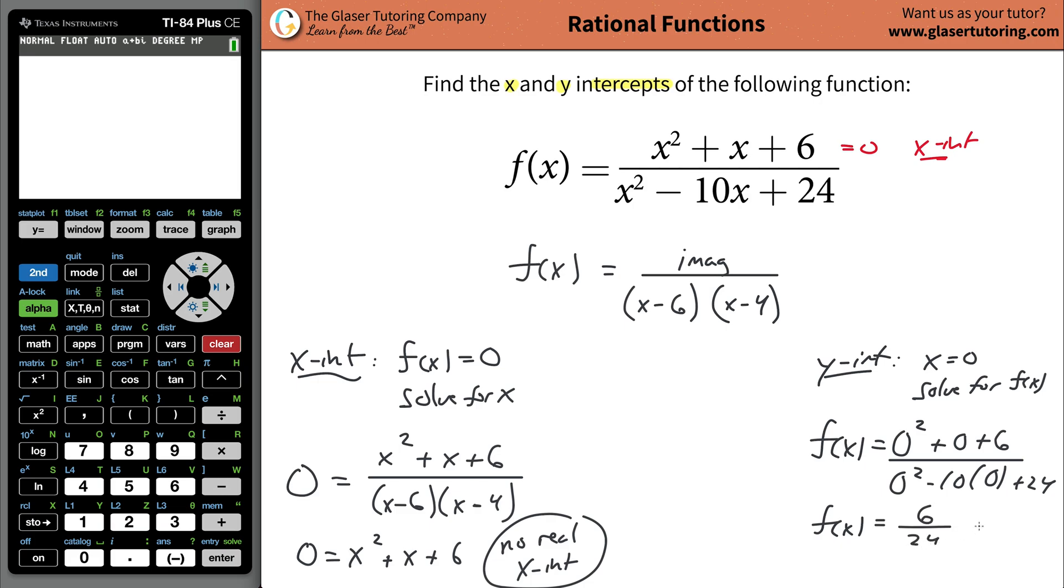What are you left with? Six over 24. What does that work out to be? One fourth. So this is your y intercept. The coordinate is x equaling zero and y is one fourth.